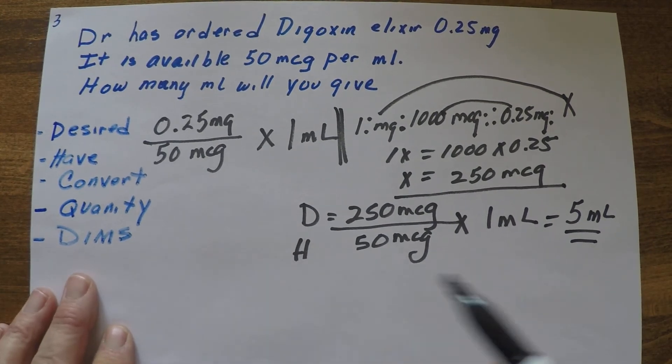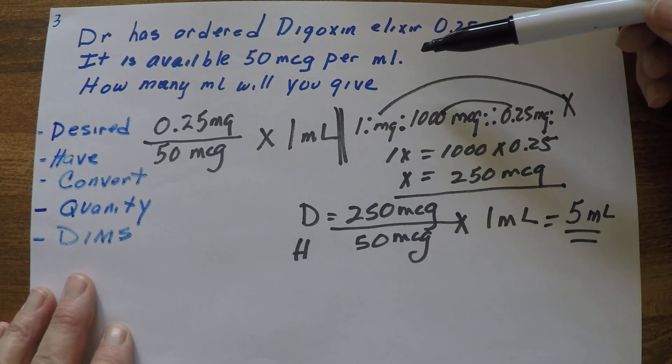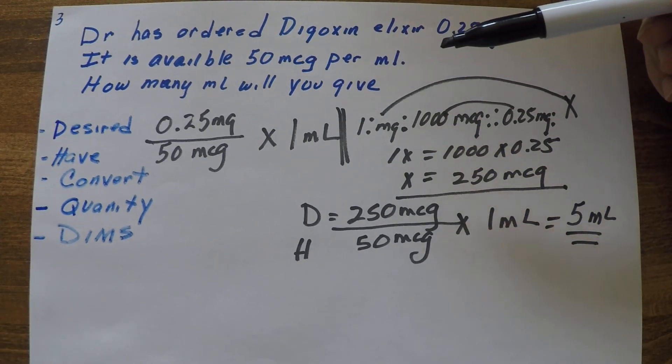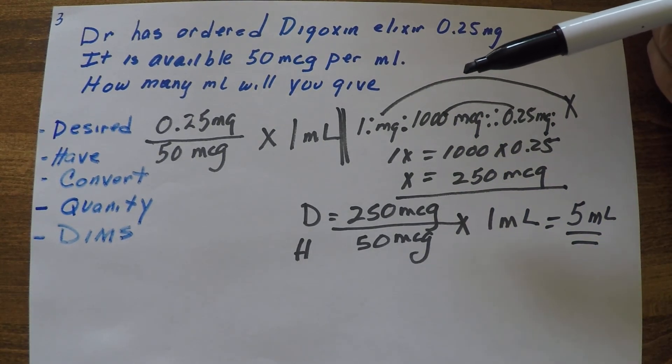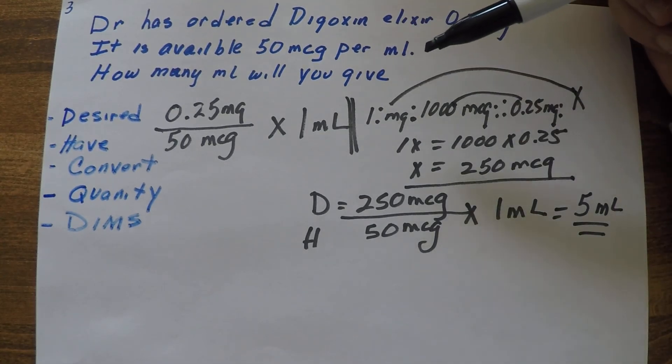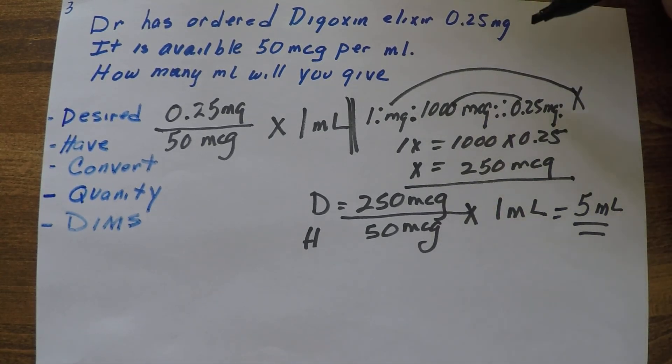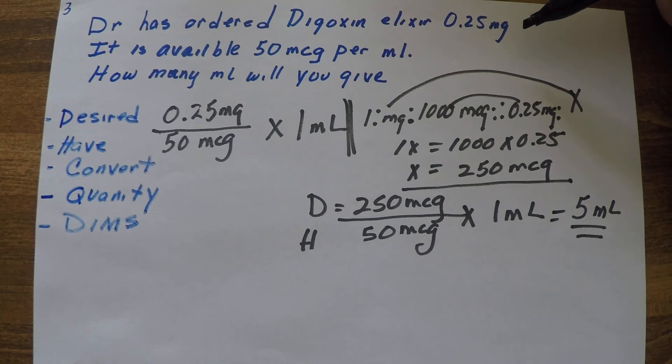So does it make sense? 5 ml. So 1 ml for 50 mics, and here we have 250 mics, so we know it's going to be more than that, right? So just logically thinking, it does make sense.